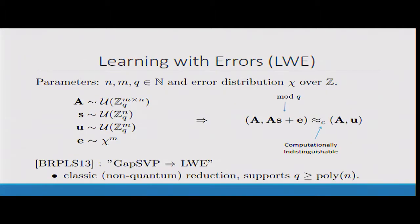So we heard in Daniela's talk already about the learning with errors problem. This is just to see the notation that I'm going to use here. You've got your matrix A, your secret vector s, uniform vector u, and an error vector e.